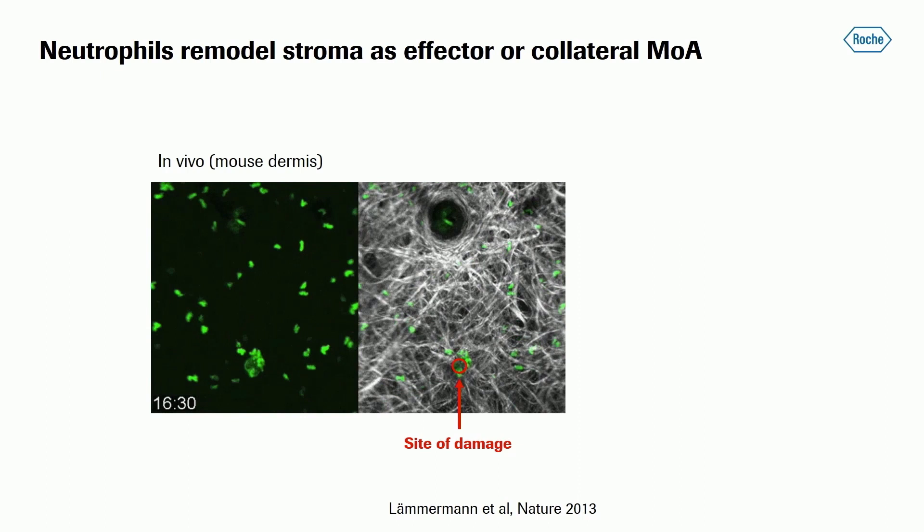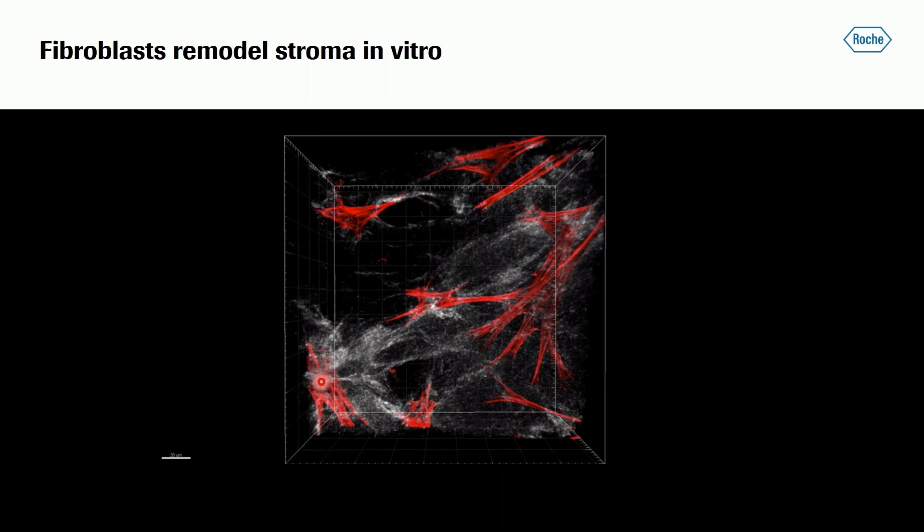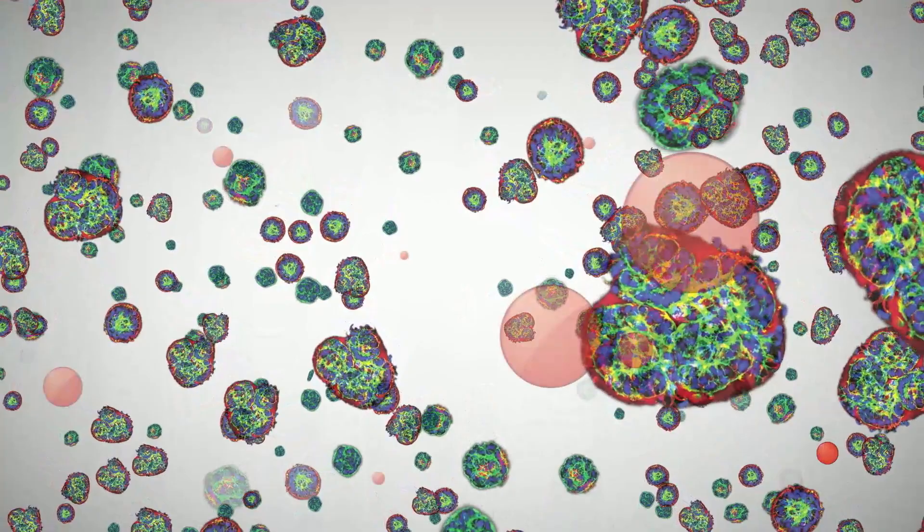Here is a beautiful in vivo study by Tim Lemmermann. You can see how green mouse neutrophils within minutes migrate towards an induced damage and then they produce collagen fibers here in between them. Indeed, fiber rests alone were sufficient to recruit neutrophils in the in vitro platform.